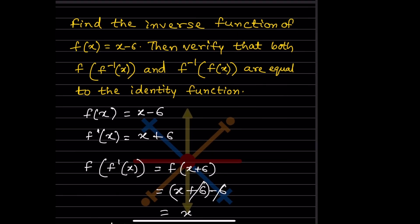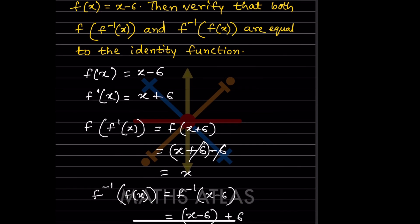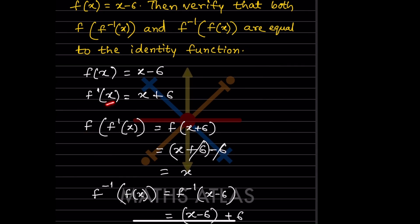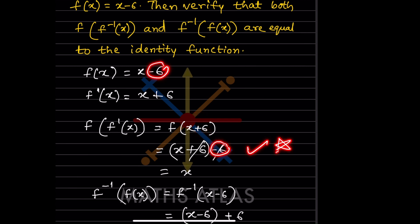Next, find the inverse function of f(x) = x - 6, then verify that both f(f⁻¹(x)) and f⁻¹(f(x)) equal the identity function. To find f⁻¹(x): the subtraction becomes addition, so f⁻¹(x) = x + 6. Now for f(f⁻¹(x)): since f⁻¹(x) = x + 6, we substitute x + 6 into f(x) = x - 6, writing (x + 6) in place of x.